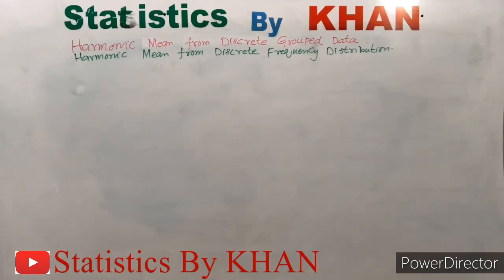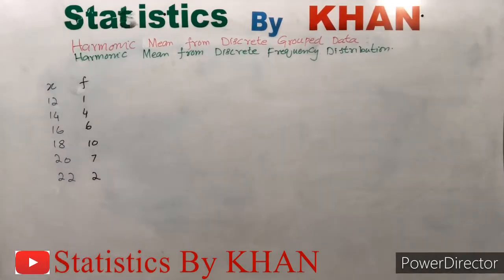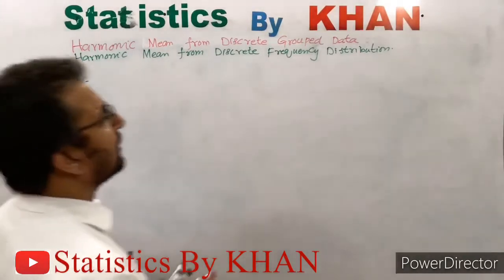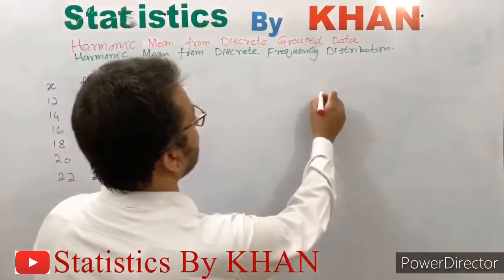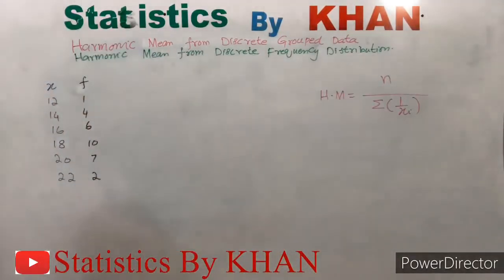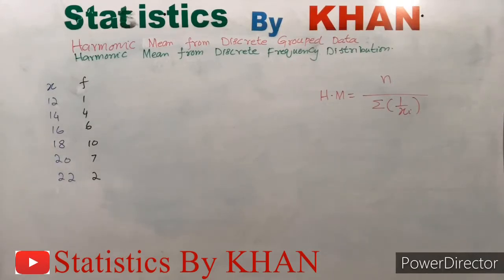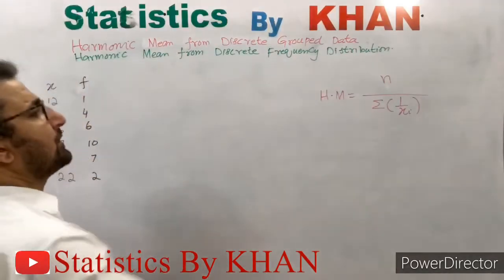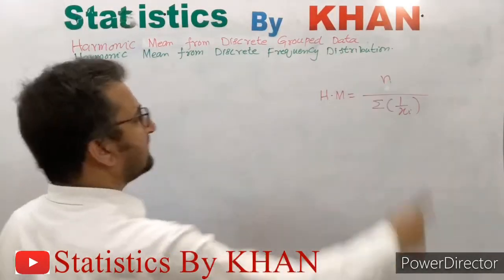We will take a discrete frequency distribution as our data set. The basic formula for the harmonic mean is presented here — this is the formula for individual data. However, our data is not individual data; rather, it is grouped data or a frequency distribution, so we will need to modify this formula.